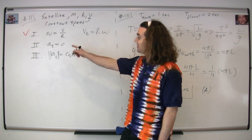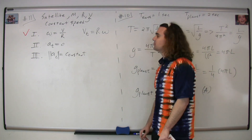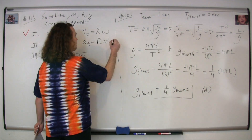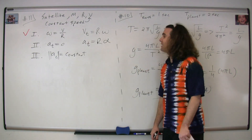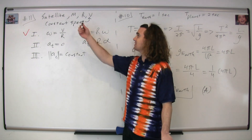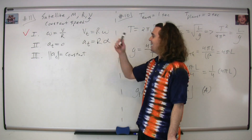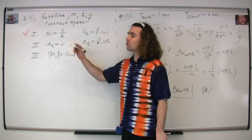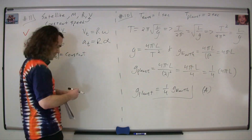Statement two: the tangential acceleration is equal to zero. Tangential acceleration equals the radius times the angular acceleration. If it's moving at a constant speed, that means the angular acceleration is equal to zero, therefore the tangential acceleration will also be zero.